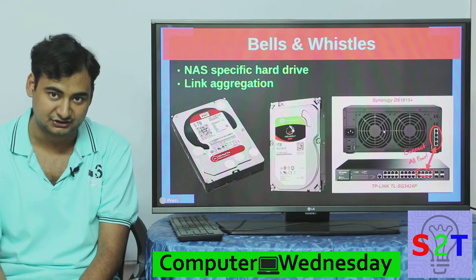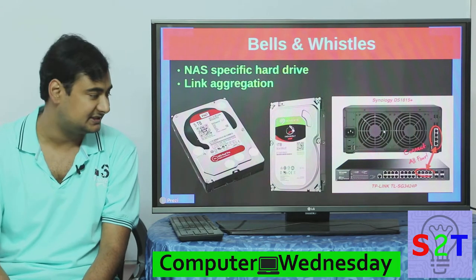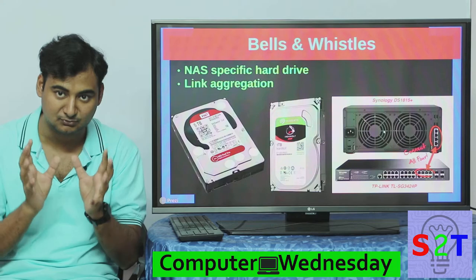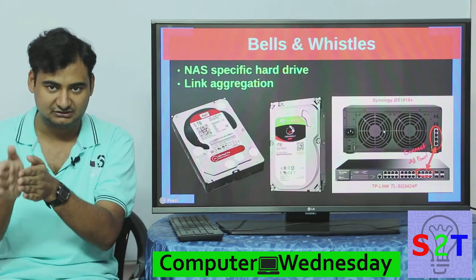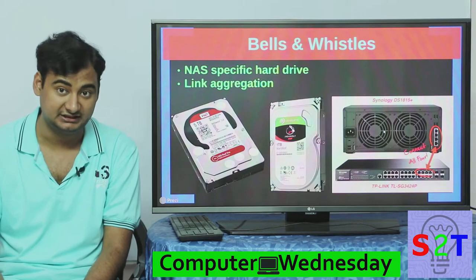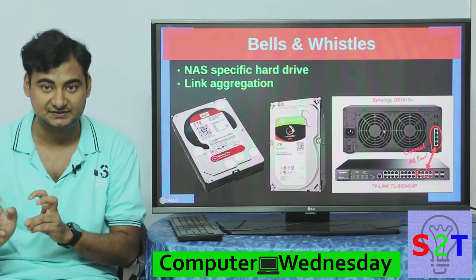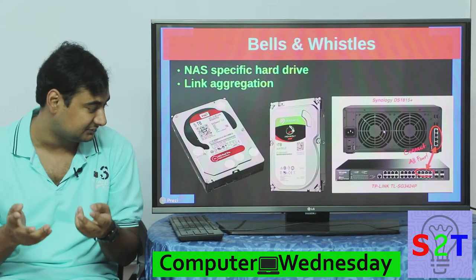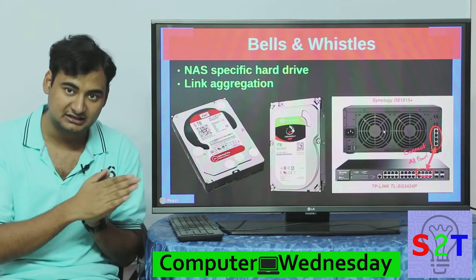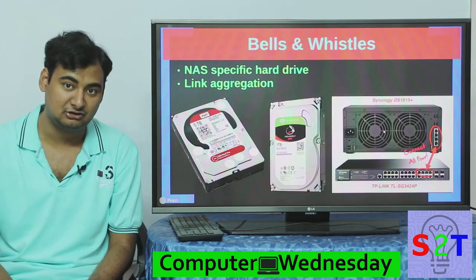There are some important details when talking about NAS storage. First, you need to buy what are called NAS or array-scale hard drives — sometimes called network hard drives. Because NAS enclosures are compact, drives are stacked closely together, so vibration from one transfers to another. A standard drive will die quickly in this environment. That's why companies like Western Digital release NAS-specific drives — for example, the WD Red — which are designed to handle high temperatures, high vibrations, and being powered on 24/7.